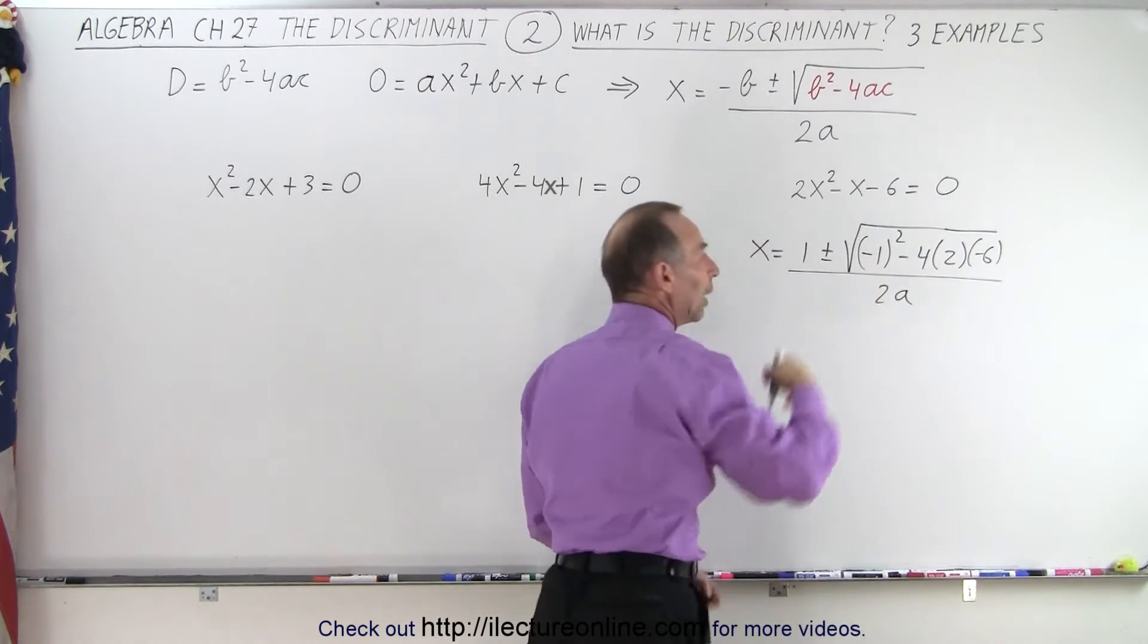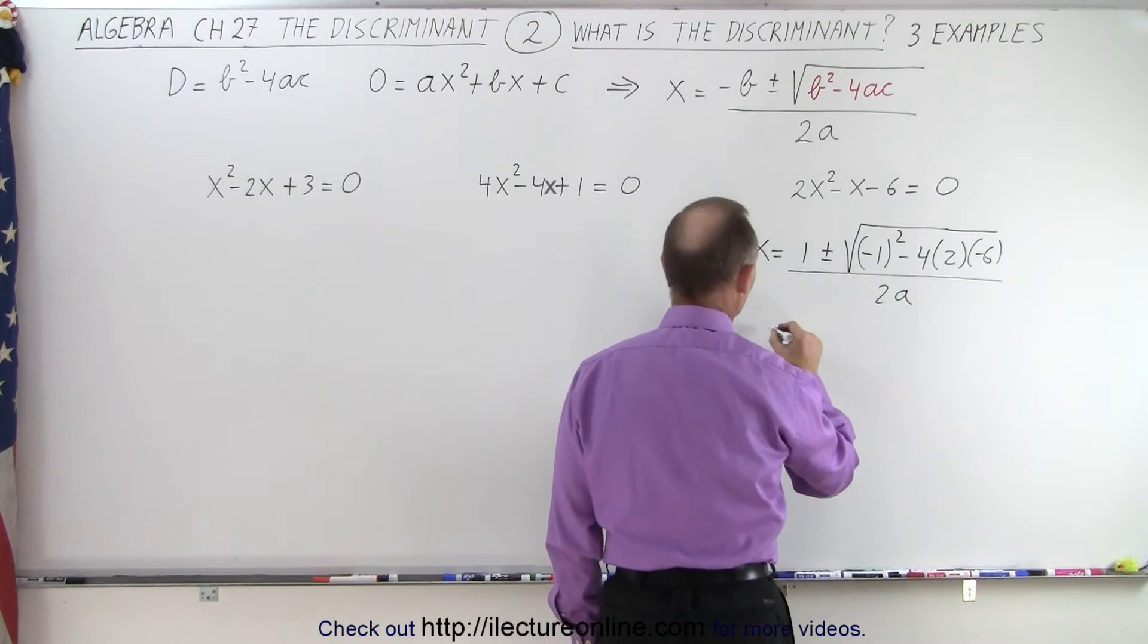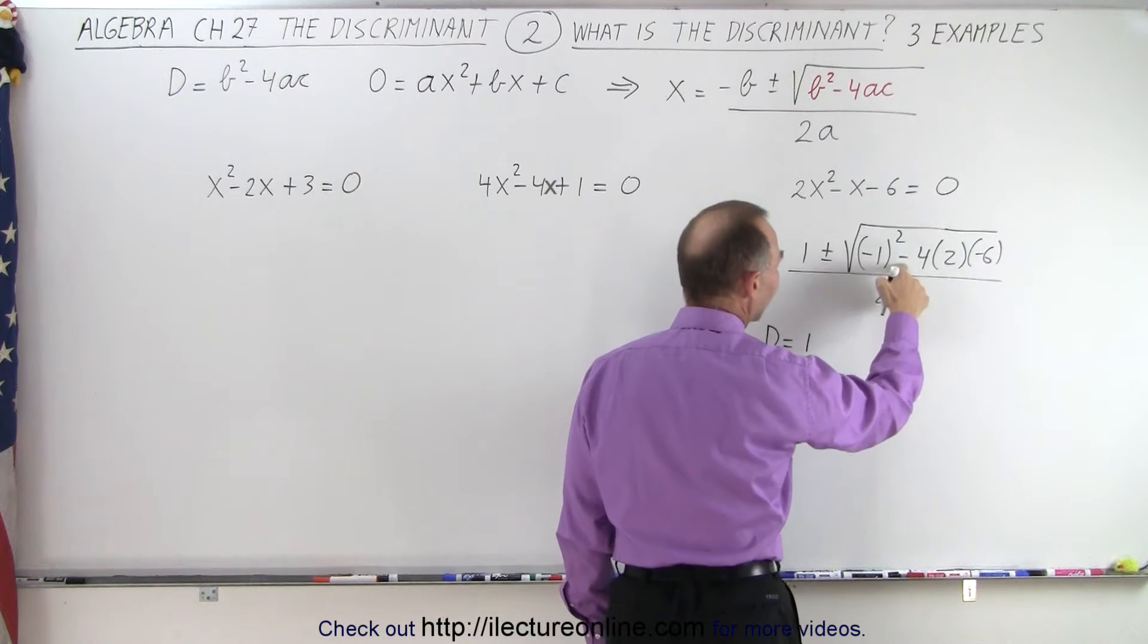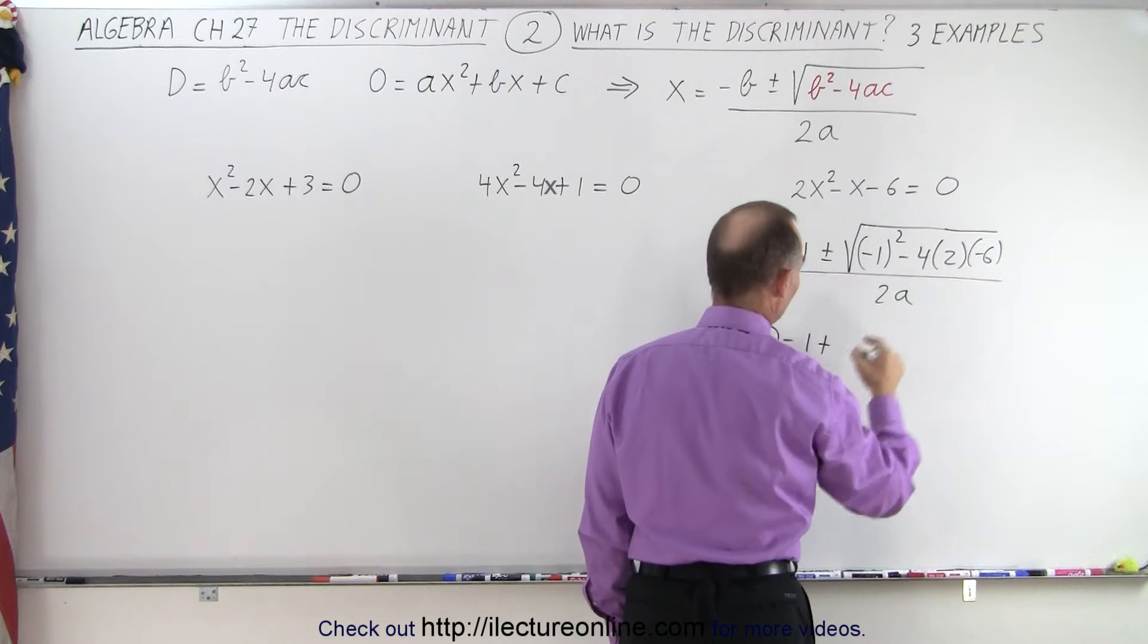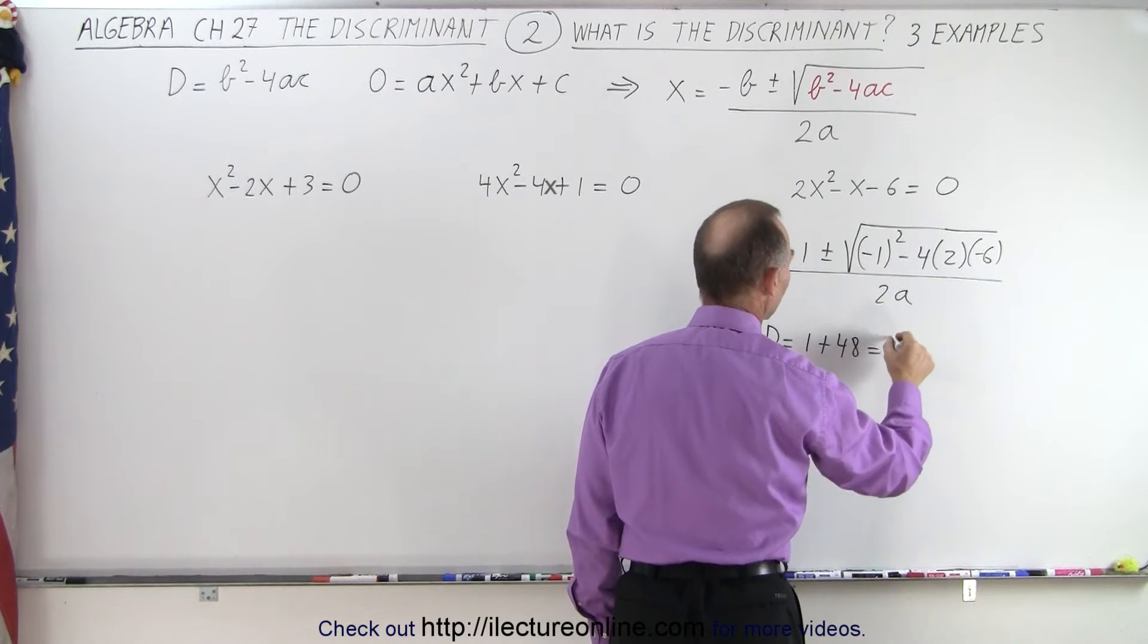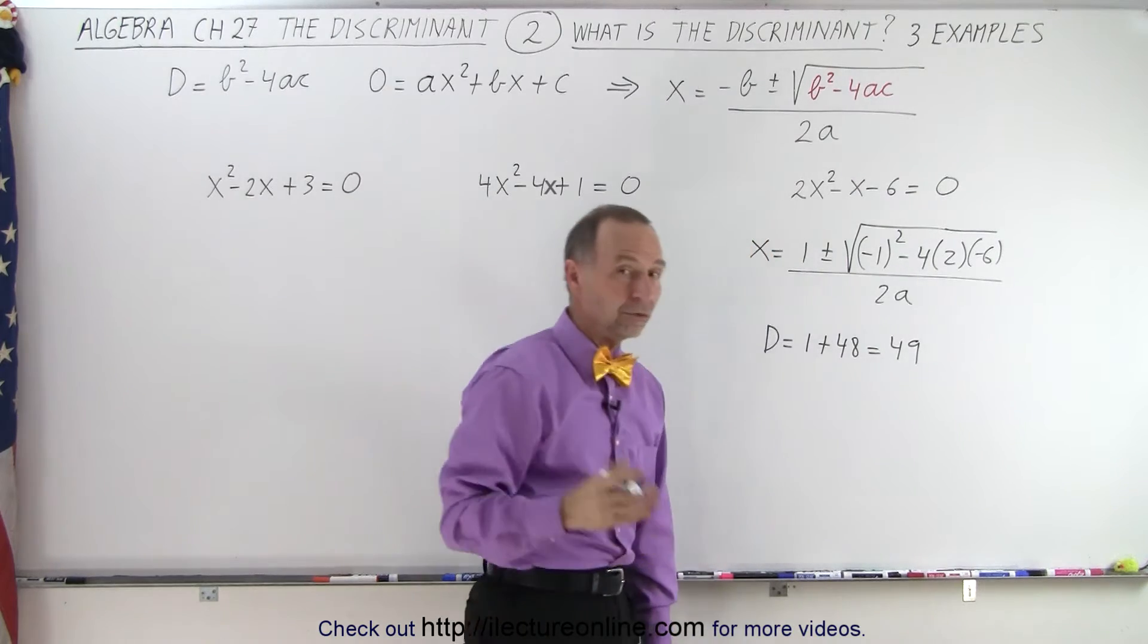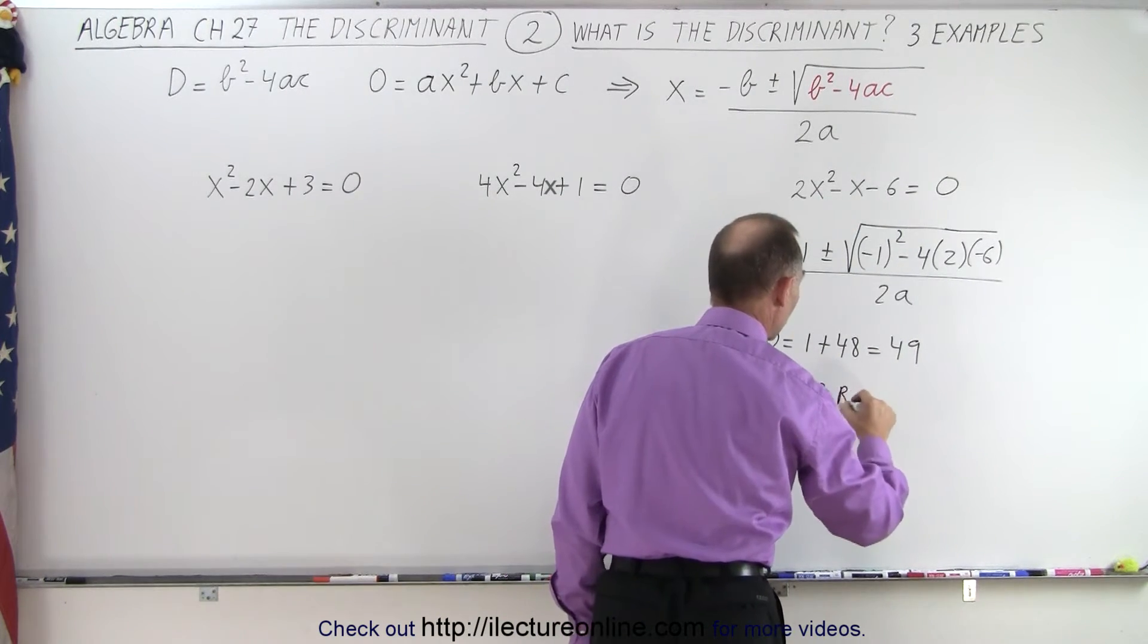Let's work out what's inside the radical. We'll call that D. In this case, D equals (-1)² which is 1, minus times a minus which is plus, 4 times 2 is 8, times 6 is 48, so that equals 49. In other words, it's a positive number, so we conclude this equation has two real solutions.